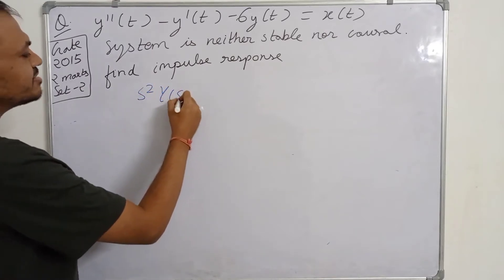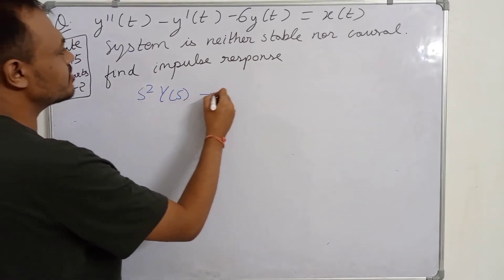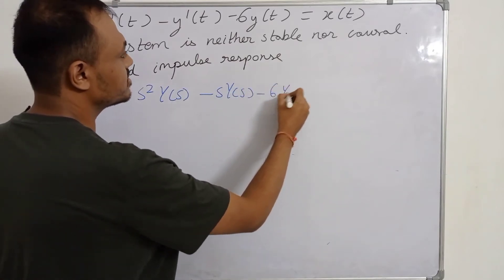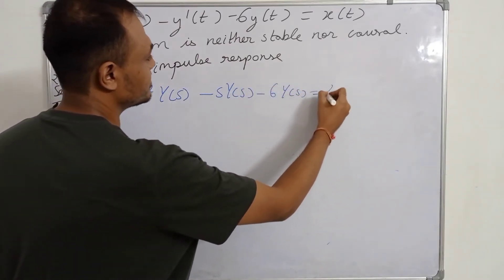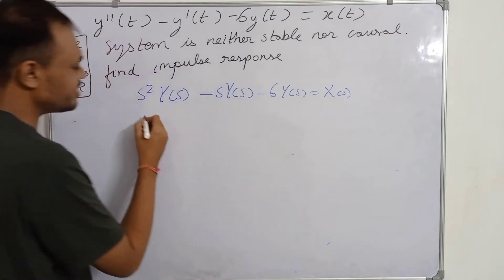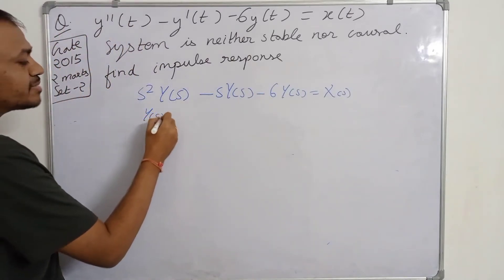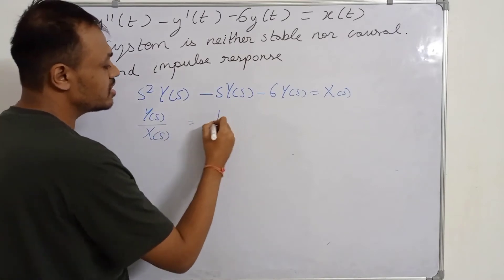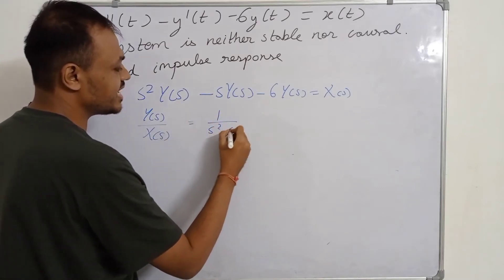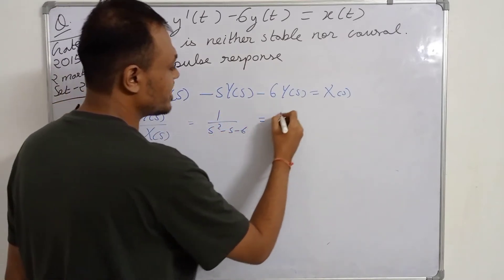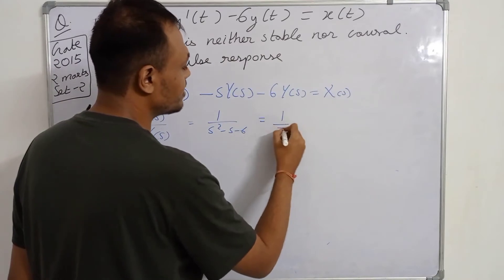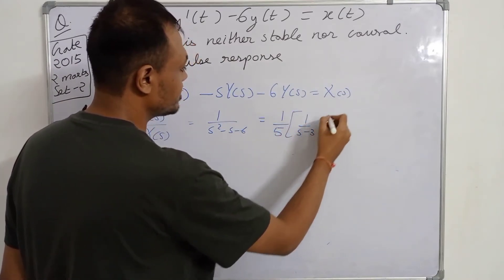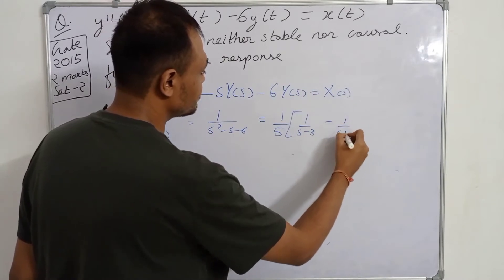First, we take the Laplace transform, which gives s²Y(s) minus sY(s) minus 6Y(s) equals X(s). So the transfer function H(s) = Y(s)/X(s) equals 1 over (s² minus s minus 6). Using partial fractions, we can write this as (1/5)[1/(s minus 3) minus 1/(s plus 2)].